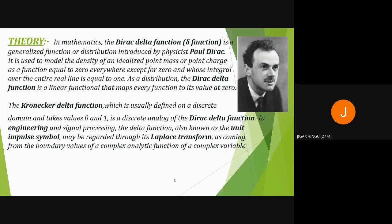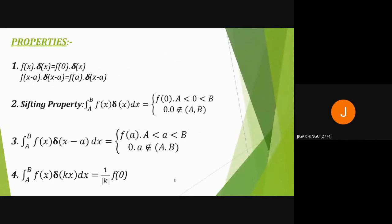As a distribution, the Dirac delta function is a linear functional that maps every function to its value at zero. The Kronecker delta function, usually defined on the discrete domain and taking values zero and one, is the discrete analog of the Dirac delta function. In engineering and signal processing, the delta function, also known as the unit impulse, may be regarded via its Laplace transform as arising from the boundary value of a complex analytic function of a complex variable. Now Milan will explain the properties.